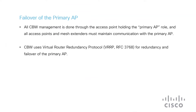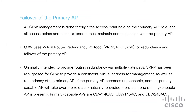CBW uses Virtual Router Redundancy Protocol, or VRRP, for redundancy and failover of the primary AP. This VRRP protocol is defined in RFC 3768. Originally intended to provide routing redundancy via multiple gateways, VRRP has been repurposed for CBW to provide a consistent virtual address for management, as well as redundancy of the primary AP.